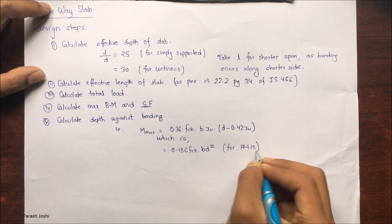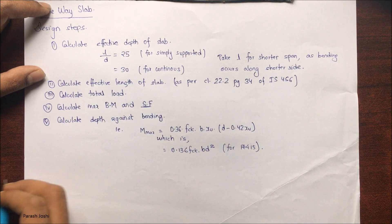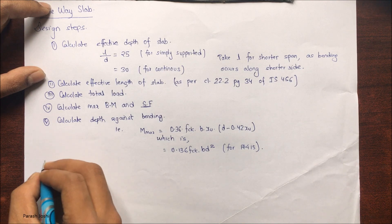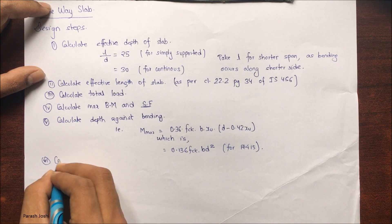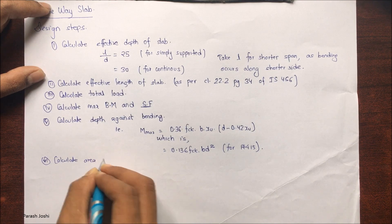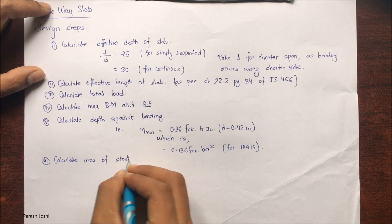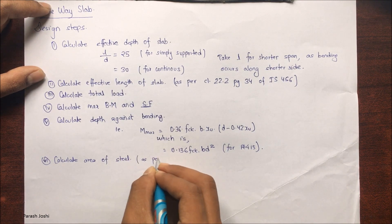The sixth step is to calculate the area of steel required, as per the relevant code provisions.